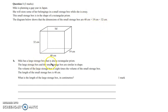Mickey has a large storing box that is also a rectangular prism. The large storing box and the small storage box are similar in shape. The volume of the large box is 8 times the volume of the small box. The length of the small storage box is 40cm. What is the length of the large storage box in centimeters?